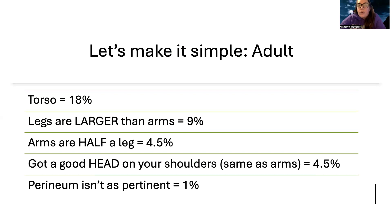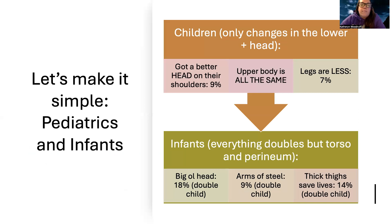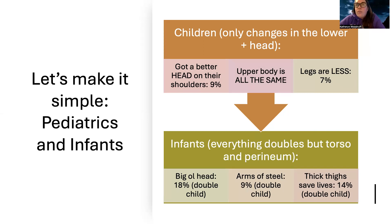For pediatrics and children, they only differ in the lower extremities and head. Children have a bigger head — 9% compared to adults' 4.5% — and the upper body including arms and torso is the same. Their legs are less than adults: 7% instead of 9%. For infants, most values double compared to children, but the torso and perineum stay the same. Infants have 18% for the head, 9% for arms, and 14% for the legs. If you can remember children's values, just double them for infants except for torso and perineum.